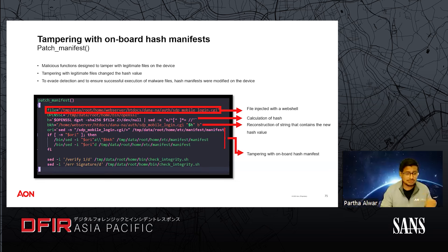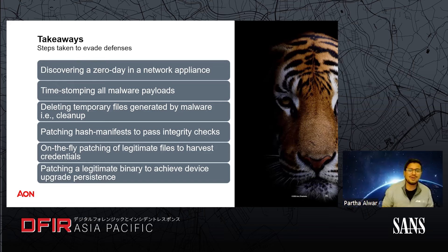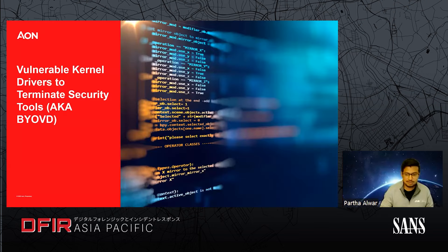To handle that, the attackers created a bash function called patch_manifest. It references the file that has been changed, calculates the new hash value, reconstructs the string, and puts that new hash value back into the onboard hash manifest. It's a very clever technique. Almost every action taken by the threat actor was to avoid potential detection — from using a zero-day vulnerability to patching legitimate files — all to achieve their objectives. For the next case study, I'll turn it over to Mahmood.